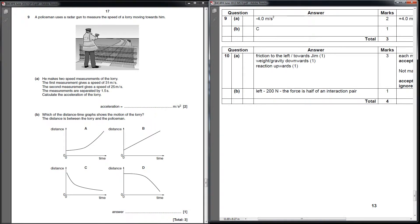Question 9 involves calculation and looking at distance time graphs. A policeman uses a radar gun to measure the speed of a lorry moving towards him. He makes two speed measurements of the lorry. The first measurement gives a speed of 31 metres per second. The second gives a speed of 25 metres per second. The measurements are separated by 1.5 seconds. Calculate the acceleration of the lorry.